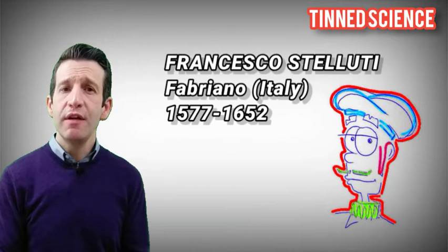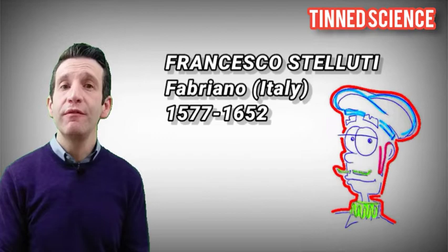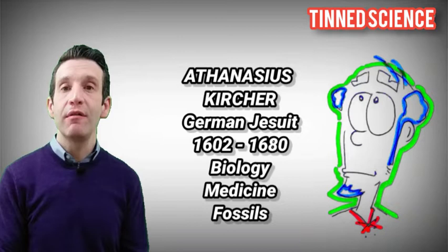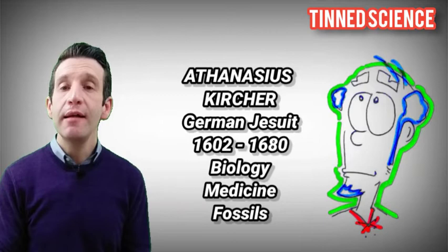Francesco Stellutti, using a Galileo microscope, reported several observations of insects with a level of detail far beyond anything else seen before at naked eye. In the same period, other studies on microorganisms were carried out by Athanasius Kircher, an exceptionally clever man. He was a German Jesuit interested in biology, medicine and the study of fossils.